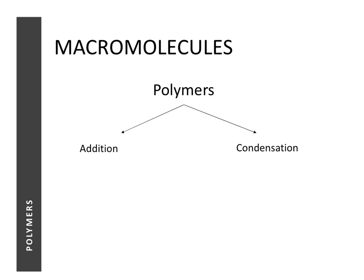There are two types of polymers depending on how they are formed. We have addition polymers, which are formed from addition polymerization, and condensation polymers, which are formed from condensation polymerization. It's very important to know from the start that there are two kinds of polymers and two kinds of polymerization. We're going to look at addition polymerization in this lesson, and condensation polymerization in the next lesson.